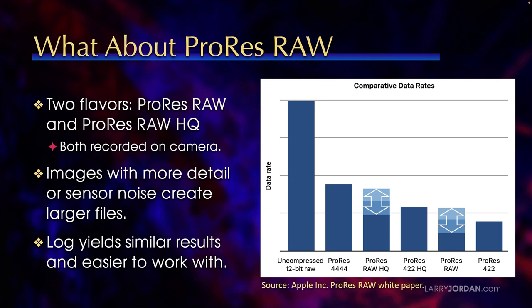There are two flavors of ProRes RAW: ProRes RAW and ProRes RAW HQ. Both have to be recorded on the camera — you cannot convert to ProRes RAW after the image is shot. If you have images with more detail or sensor noise, they create larger files, because ProRes RAW records a variable data rate depending upon what the sensor data is. All the other ProRes flavors record a constant data rate, which means that even if a file gets noisy, the size of the file does not increase.